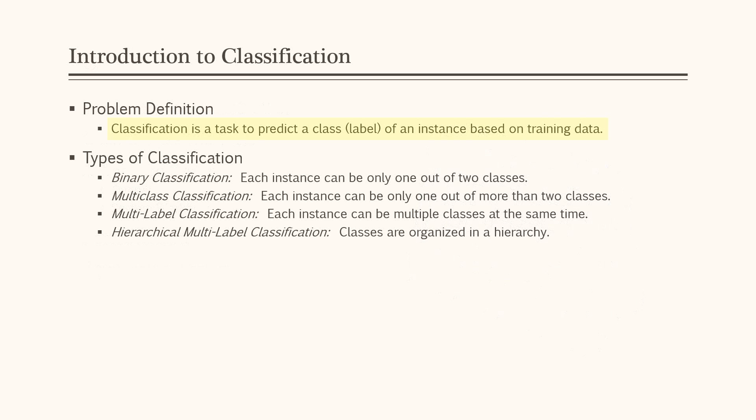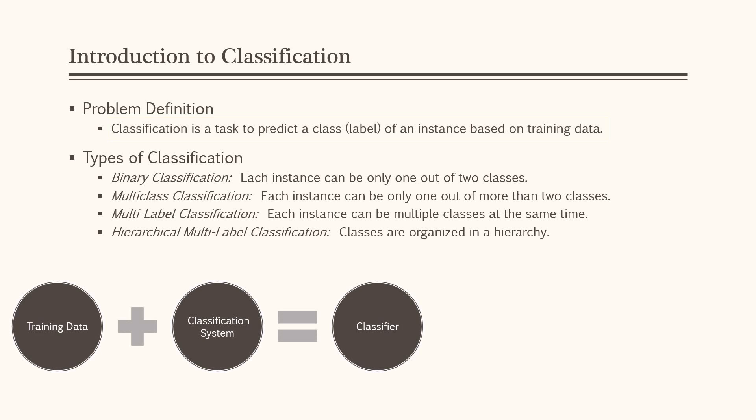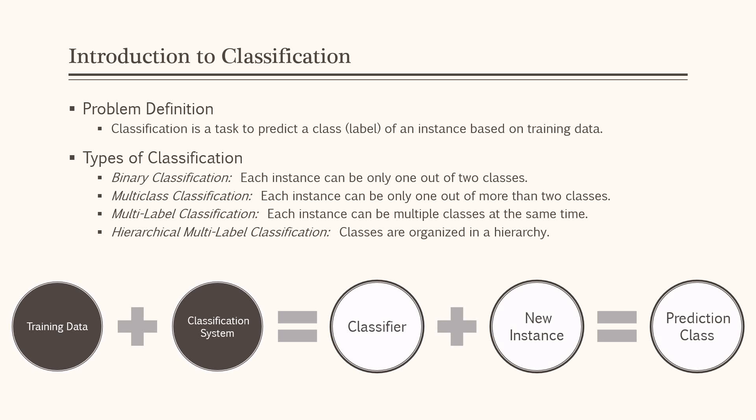Classification is a task to predict a class or label of an instance based on training data. This system learns about training data where we know the real classes. The result is a classifier. The classifier is then used to predict the class of new instances.